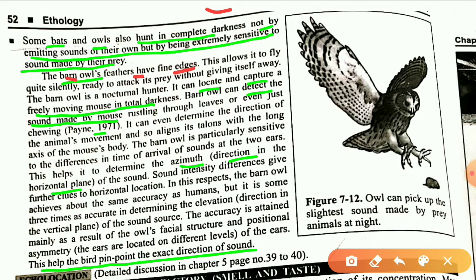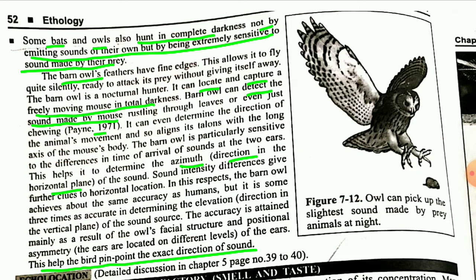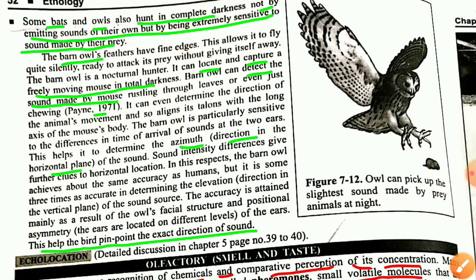The barn owl can even determine the direction of the animal's movement and aligns its talons with the long axis of the mouse's body. It is particularly sensitive to the difference in time of arrival of sounds at the two ears, which determines the azimuth — the axis of direction in the horizontal plane. This allows the owl to pinpoint the exact direction of a sound and capture prey. This concludes our topic on auditory perception; next we will cover olfactory, smell, and taste.